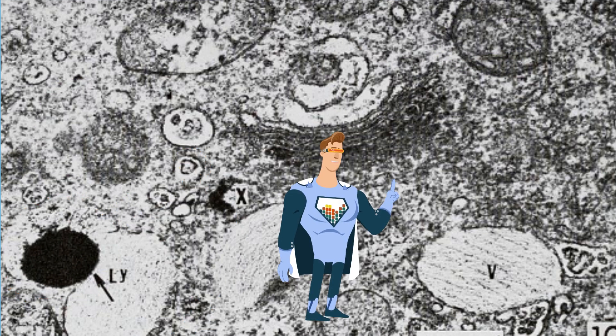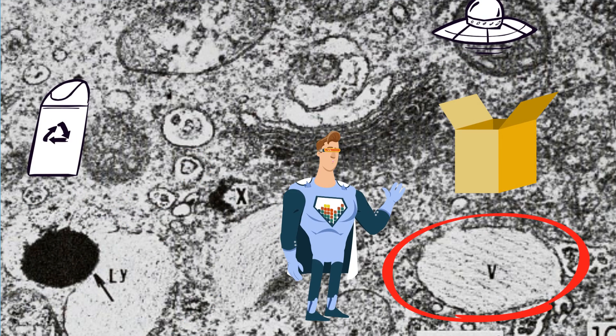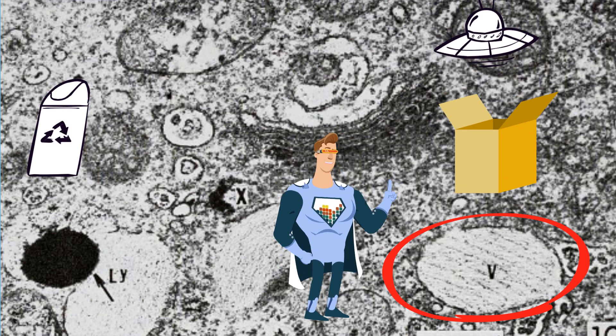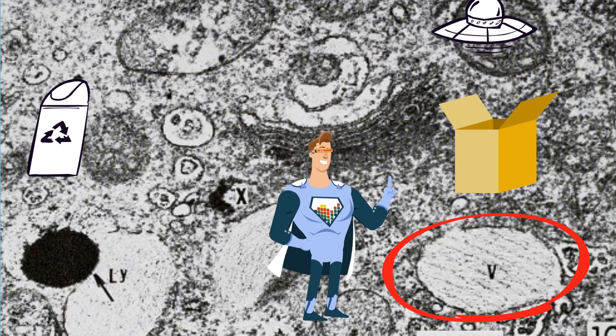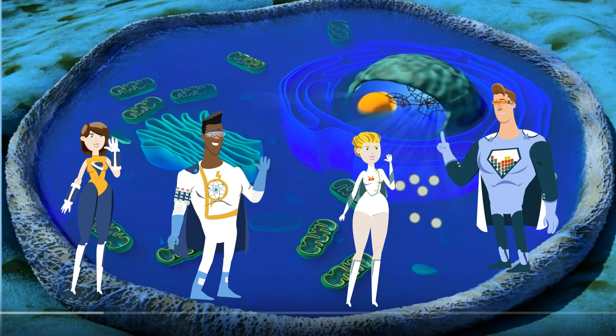And finally these vacuoles store food and water for the cell. A plant cell has a larger vacuole than an animal cell. So there is the team of organelles that help keep the cell alive.